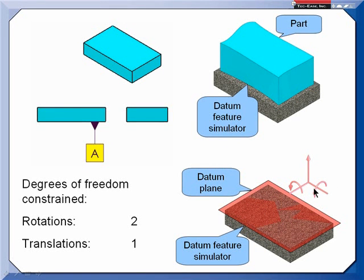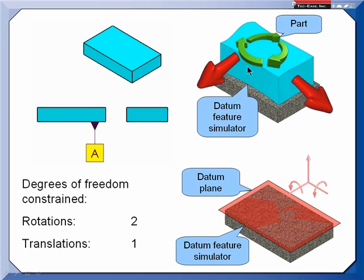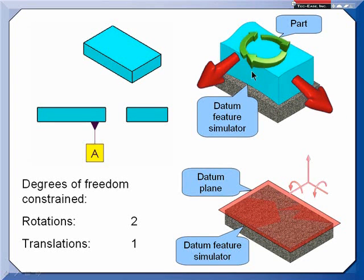Sometimes, though, it's easier to understand the degrees of freedom being constrained by thinking about what degrees of freedom have not been constrained. If we look at this part resting on a surface plate, the part could still move left and right and front and back, and it could still rotate on the plate.